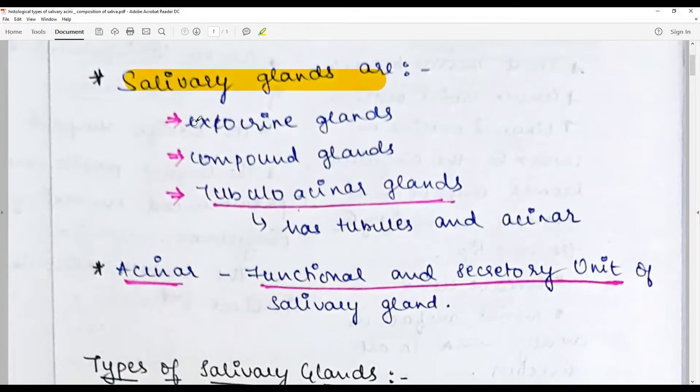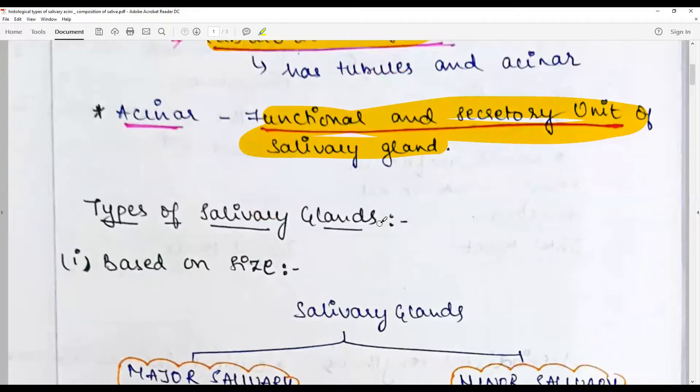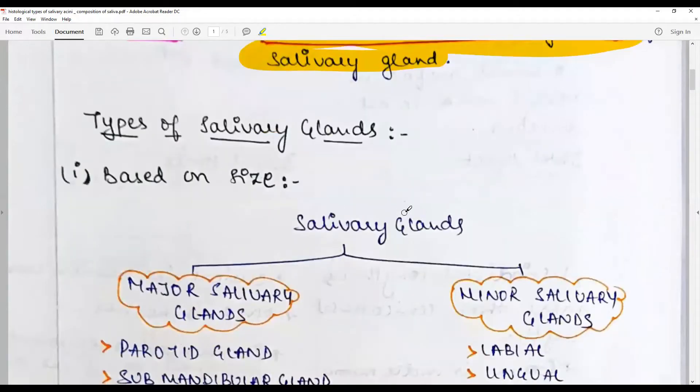Salivary glands are a brief introduction: exocrine glands, compound glands, and composed of tubular acinar glands, meaning they have tubules and acinar. The acinar is the functional and secretory unit of salivary gland.